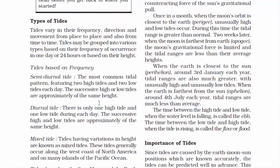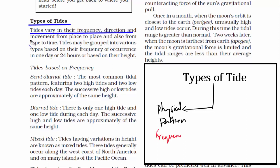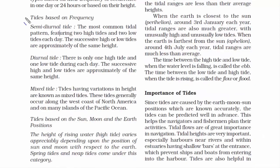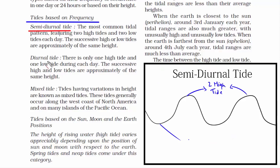Now we go to types of tides. Tides are grouped in two categories: one is based on physical patterns such as frequency, direction and movement, and the second is based on the positions of the sun, moon and the earth. Under physical patterns, we have three types. The first is semi-diurnal tide — the most common form — which has two high and two low tides each day, and they are of the same height.